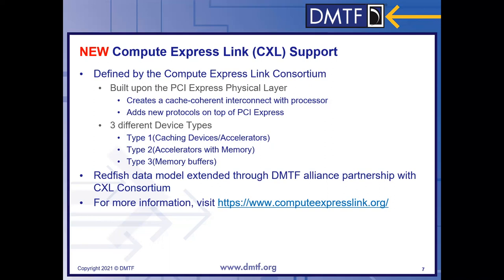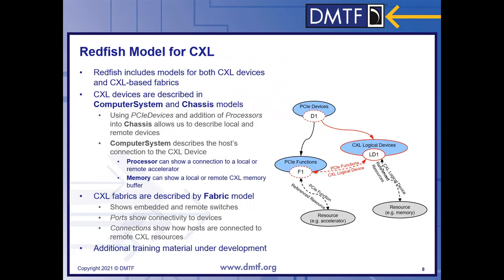CXL supports three different device types. Type 1 is caching devices or accelerators, like a SmartNIC. Type 2 devices are accelerators that have accessible memory. And Type 3 devices are memory buffers. Our data model was extended through the DMTF Alliance partnership with the CXL Consortium. If you're looking for more information on the Compute Express Link, you can visit computeexpresslink.org.